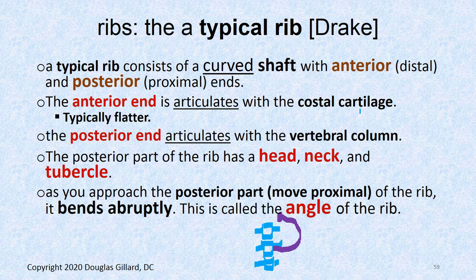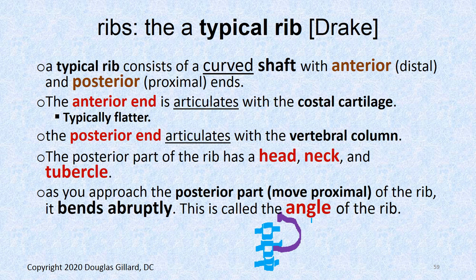The anterior end of the rib ends in costal cartilage — the rib doesn't connect directly to the sternum; there's an in-between cartilaginous tissue. The costal cartilage end is also quite flat, so you can always tell which end is anterior. The posterior end has several pieces: the rib head, a neck, and a tubercle with a facet. As you move proximally on the rib, you get a really sharp bend called the angle.